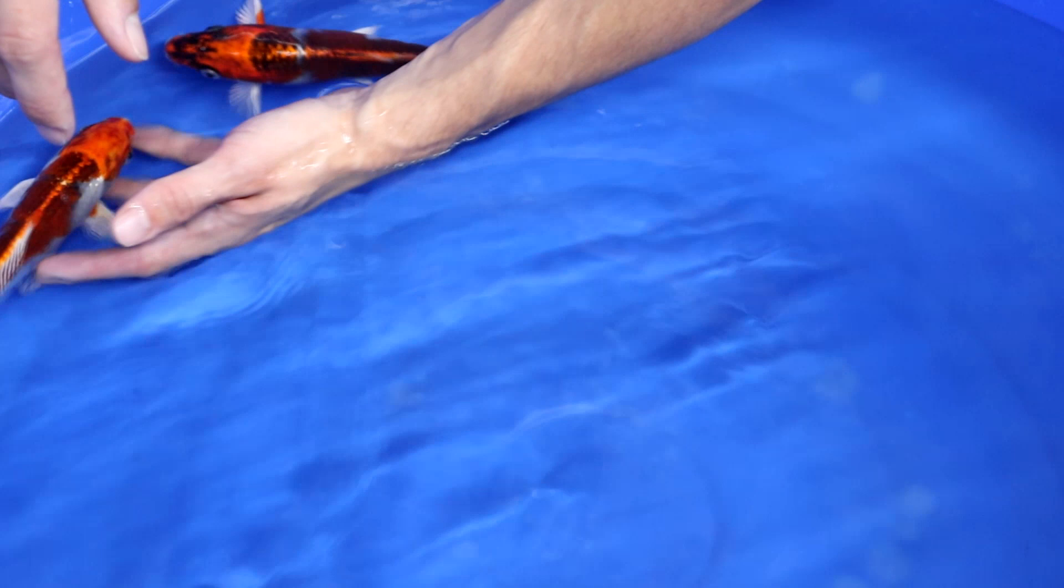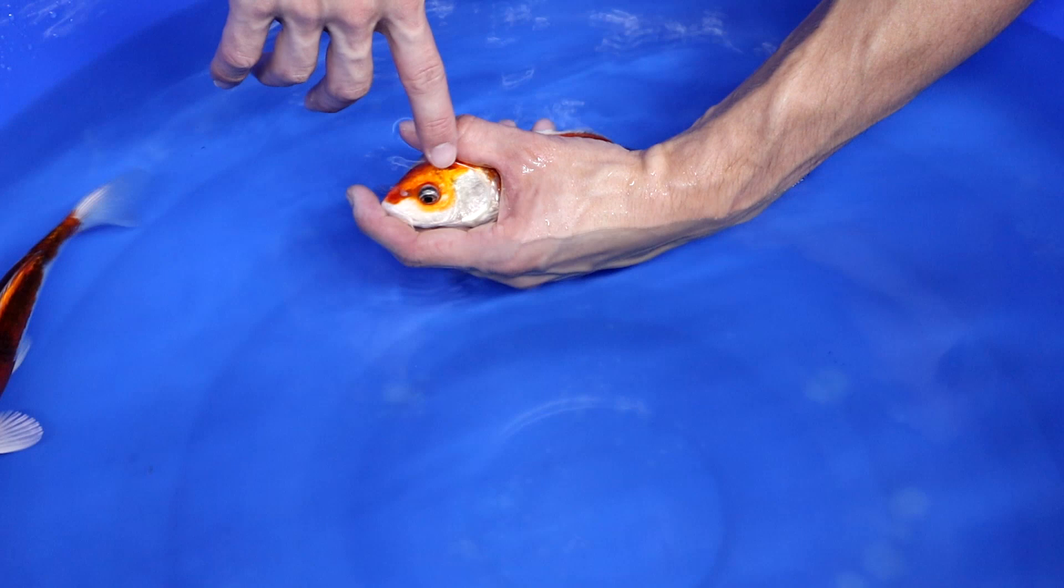And that is also happening with the other Kujaku. You can see that the red or the orange is laying over the eye on both sides, so that is not so preferred. The best thing is that the orange stops in between the eyes.